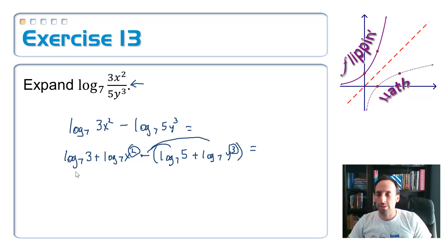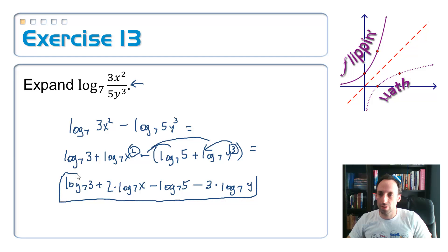I'm almost done here. So, the log base 7 of 3 plus, and I'm going to bring that 2 out front, 2 times the log base 7 of x, minus, I'm distributing that negative through, so I don't need the parentheses, log base 7 of 5. And on this one, I still have to distribute the negative sign through there, bring this 3 out front. 3 times the log base 7 of y. All right, now it's done.